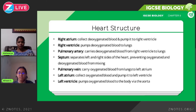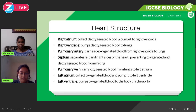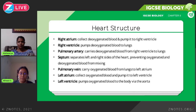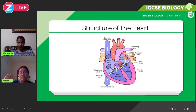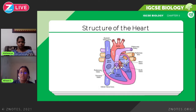The left atrium collects oxygenated blood and pumps it into the left ventricle. The left ventricle then pumps blood to the whole body via the aorta. Because the left ventricle is pumping blood to the entire body — a very large area — the blood needs to be at extremely high pressure, which is why the walls of the left ventricle are the thickest in the entire heart. Thick walls are needed to withstand this pressure and prevent rupture.